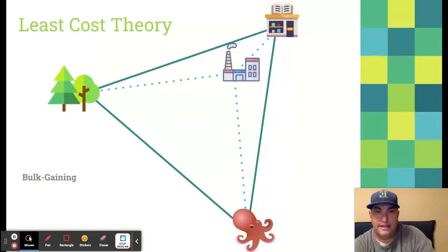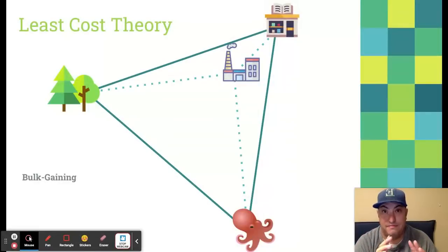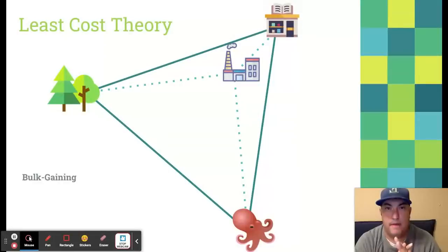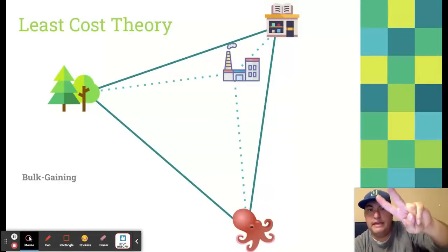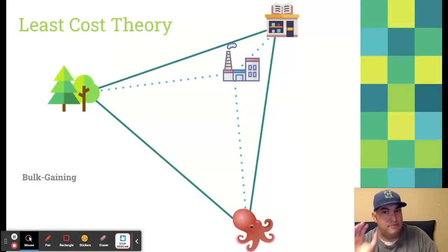Let's talk about least cost theory. This is Alfred Weber — I don't know why he didn't get the shout-out in the course and exam description, but he's our guy for least cost theory. Just a disclaimer before I get into this: I'm going to oversimplify a lot here. Least cost theory is all about deciding where your factory is going to be. In this situation, we're going to assume I am going to be making books. We'll oversimplify and say there are only two things that need to go into the book: the paper, which we get from wood from a forest, and the ink — and we're going to assume I get my ink from octopuses.